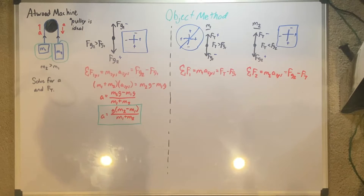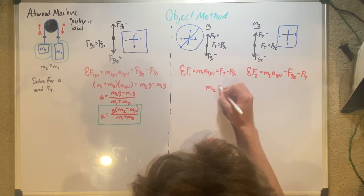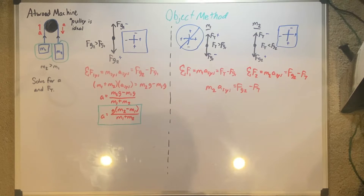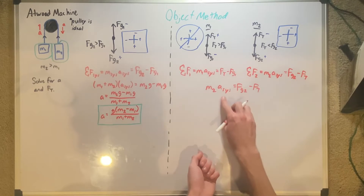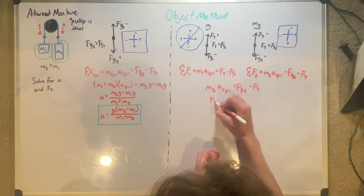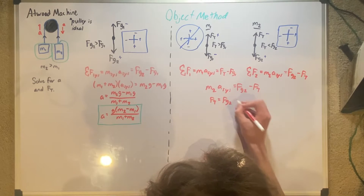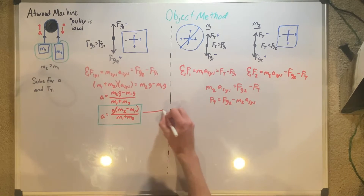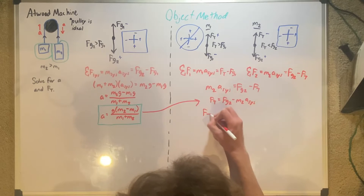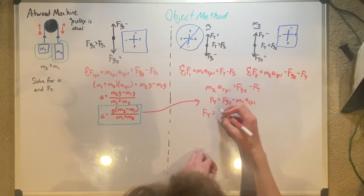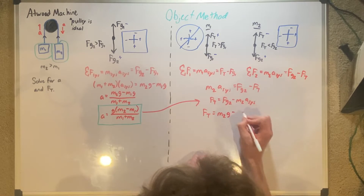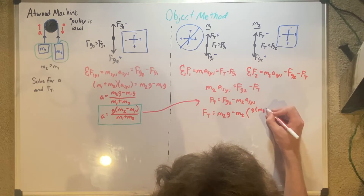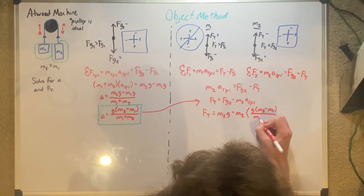We're going to use the equation M2 times A system equals FG2 minus Ft. Let's simplify this down so we can get T isolated. If we add T over and subtract M2 times A system, we get: force of tension equals force of gravity 2 minus M2 times A of the system. Now let's substitute in our value for A of the system — force of gravity is M2G — so force of tension equals M2G minus M2 times G times (M2 minus M1) all over (M1 plus M2).